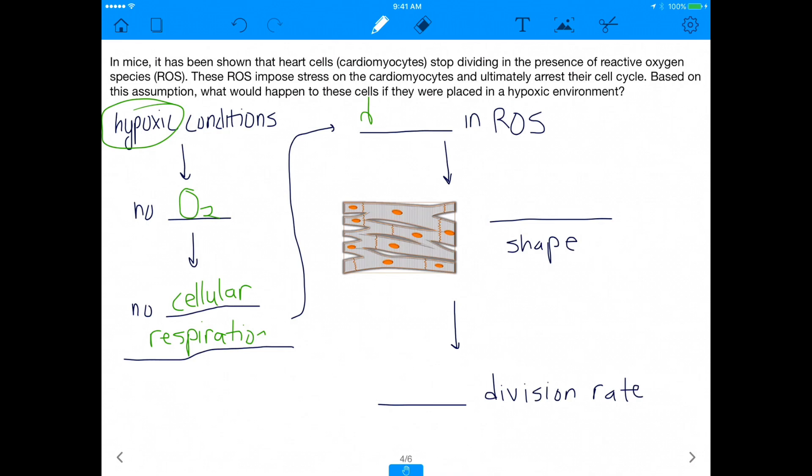Believe it or not, you get a decrease, right? Because if you're not cellular respirating, you're less likely to produce any sort of reactive oxygen species. And if you don't have any reactive oxygen species, these cardiomyocytes are going to be in better shape, right? And the reason why they're going to be in better shape is because they're not being arrested in growth anymore because the reactive oxygen species won't be imposing stress on them.